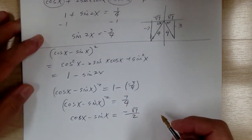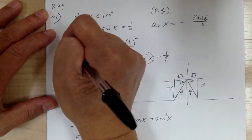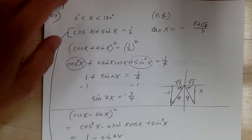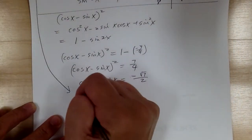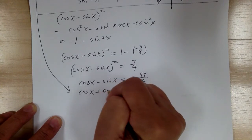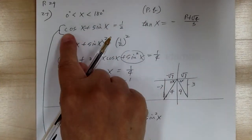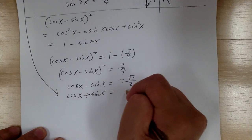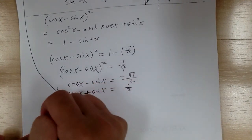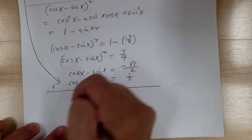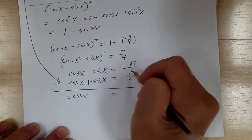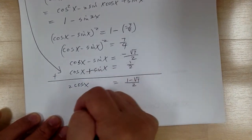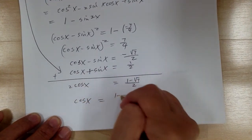Using the elimination method, we put the two equations together: cosine x plus sine x equals 1/2, and cosine x minus sine x equals negative √7 over 2. Adding them, the sine terms cancel and we get 2 cosine x equals 1/2 minus √7 over 2, so cosine x equals (1 minus √7) over 4.